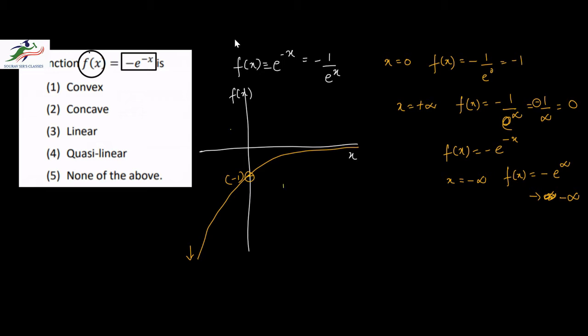Therefore this curve will be a concave curve, because we decide the convexity or concavity of the curve by looking from downwards. From downwards it is concave, so the function would be a concave function.